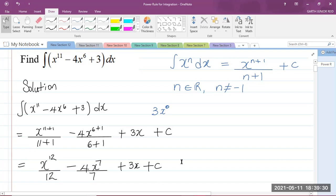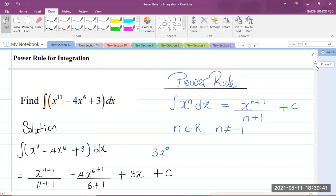I cannot simplify any further. So, that is the integral of x to the power of 11 minus 4x to the power of 6 plus 3 with respect to x, using the power rule for integration.